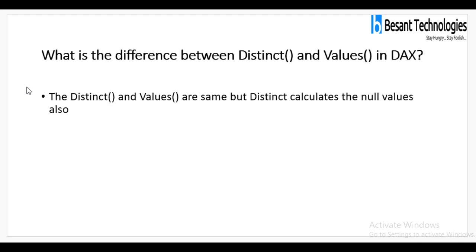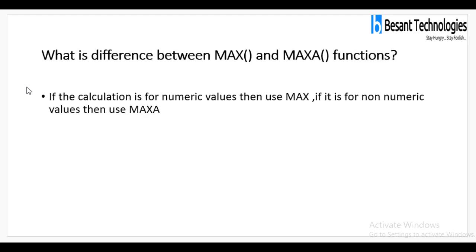What is the difference between DISTINCT and VALUES in DAX? DISTINCT and VALUES are the same, but DISTINCT also calculates null values. Null values are missing values — data that is not available. What is the difference between MAX and MAXA functions? If the calculation is for numeric values, use the MAX function. If it is for non-numeric values, use the MAXA function.